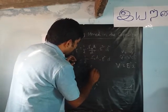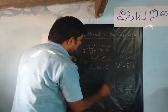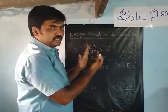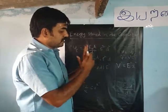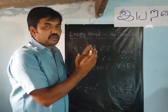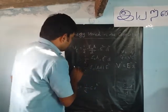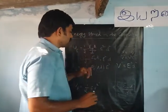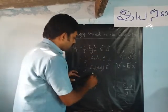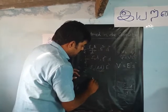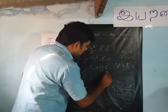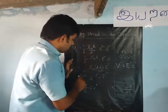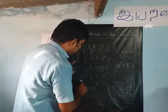Simplifying, this becomes 1 by 2 epsilon A into D into E squared. Here A is the area of cross section of the metal plates and D is the distance of separation between them, so A into D is the volume between the two plates. Dividing by volume gives the energy stored per unit volume as u suffix e equal to 1 by 2 epsilon 0 into E squared.